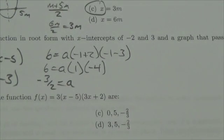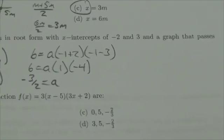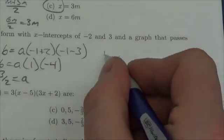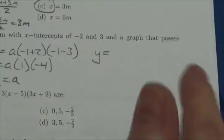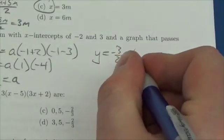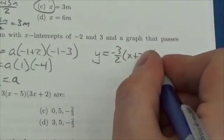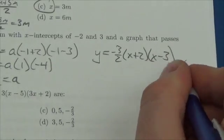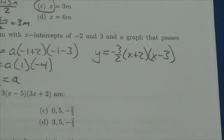Now that's not the end of this question. I've got to take it one step further and actually write down the equation. The equation in this case would be y equals negative 3 halves times x plus 2 times x minus 3, and that was the equation we're looking for.